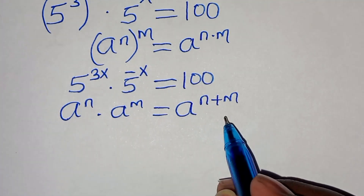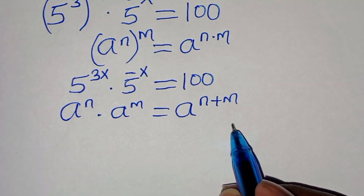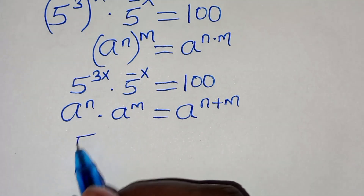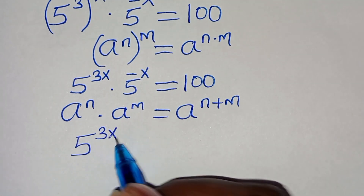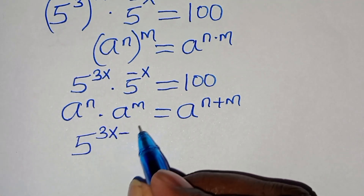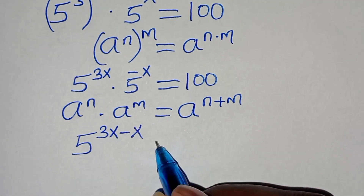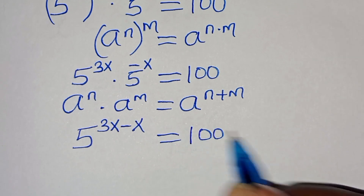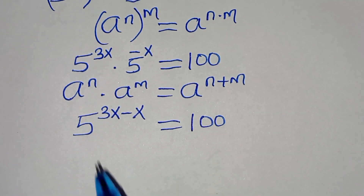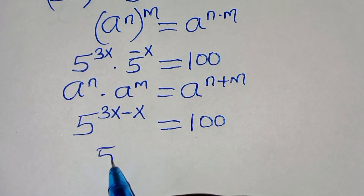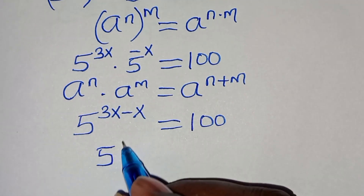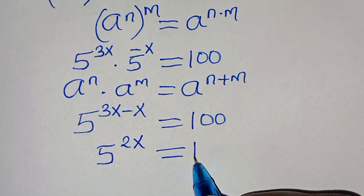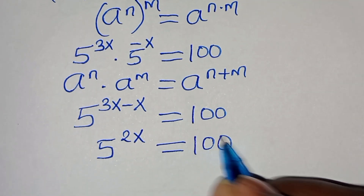Applying these exponent properties, we have 5 to the power of 3x times 5 to the power of minus x, equal to 100. This simplifies to 5 to the power of 3x minus x, which is 2x, equal to 100.